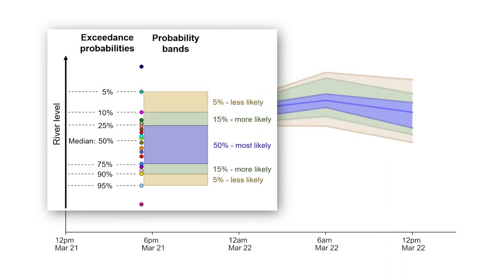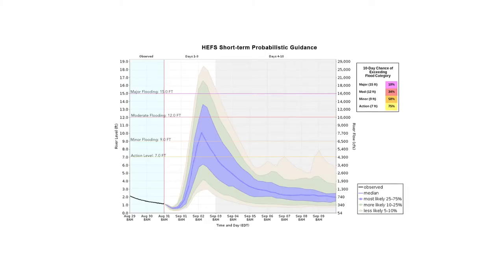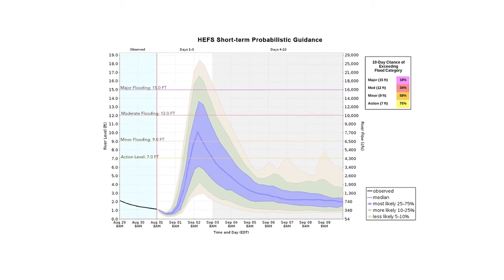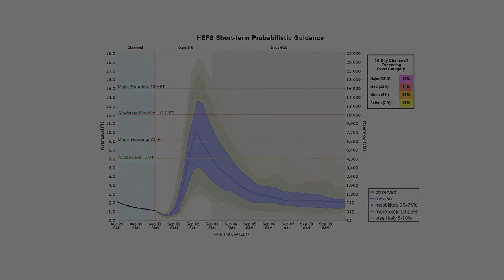Probability bands, exceedance probabilities, and the chance of exceeding a river level over the entire period are all different ways of communicating the ensemble forecast. The HEFS Short-Term Probabilistic Guidance communicates these through a single concise graphic.